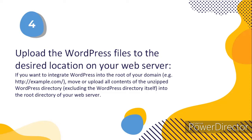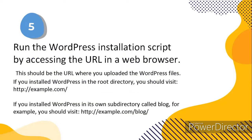But if you want WordPress installed in its own subdirectory, for example example.com/blog, then move everything inside the unzipped WordPress directory into the folder called blog. This way you can access your WordPress by typing example.com/blog. Step 5: run the WordPress installation script by accessing the URL in the web browser. If you installed WordPress in the root directory, simply visit your domain name, example.com. If installed in a subdirectory called blog, type example.com/blog to access your WordPress site.